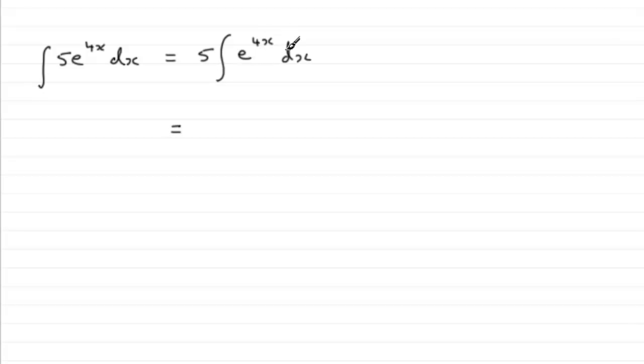Now the integral of e to the power of 4x with respect to x, we should know that if you've got anything of the form the integral of e to a constant which we'll call ax, then if we integrate this with respect to x, it's 1 over a times e to the power ax plus the constant of integration.